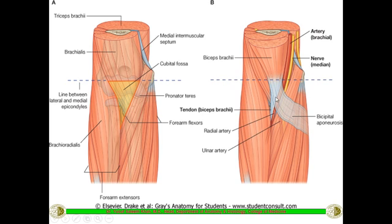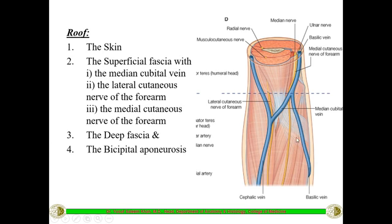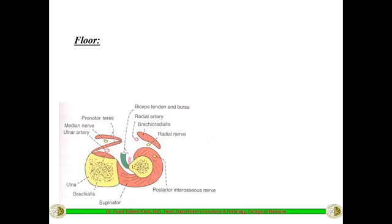The bicipital aponeurosis spreads and gets inserted into the deep fascia. So the roof structures are: after reflecting skin, the median cubital vein in the superficial fascia, then the lateral and medial cutaneous nerves of the forearm, and in the deep fascia the bicipital aponeurosis. Now coming to the floor — the floor is formed by the brachialis muscle of the arm.